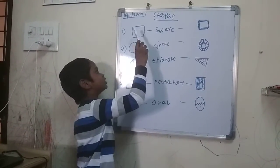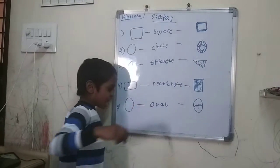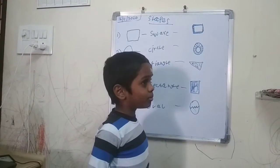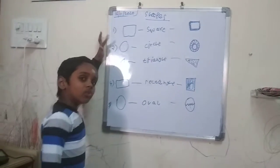This is a square. A square has corners and sides. It looks like a cube. It has four corners and four equal sides.